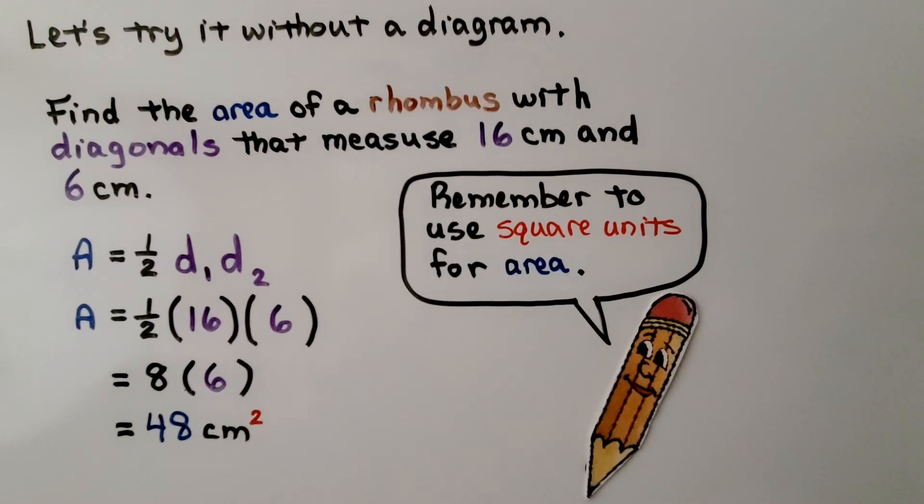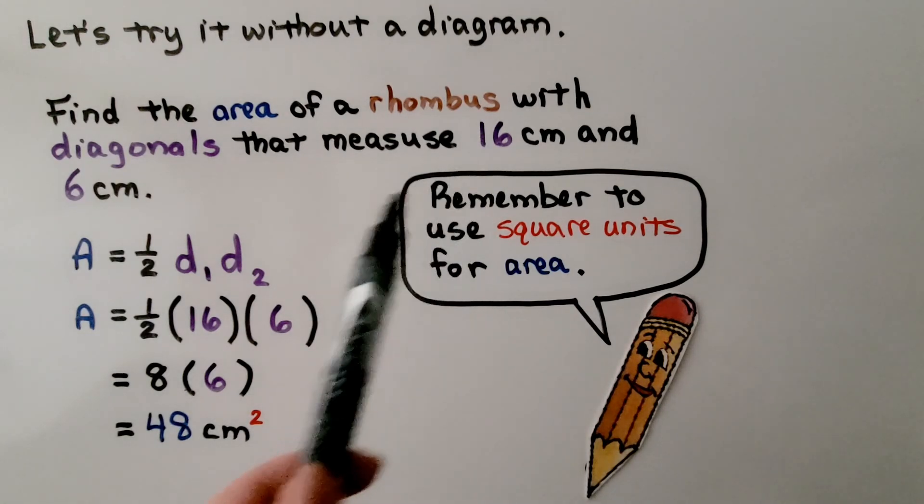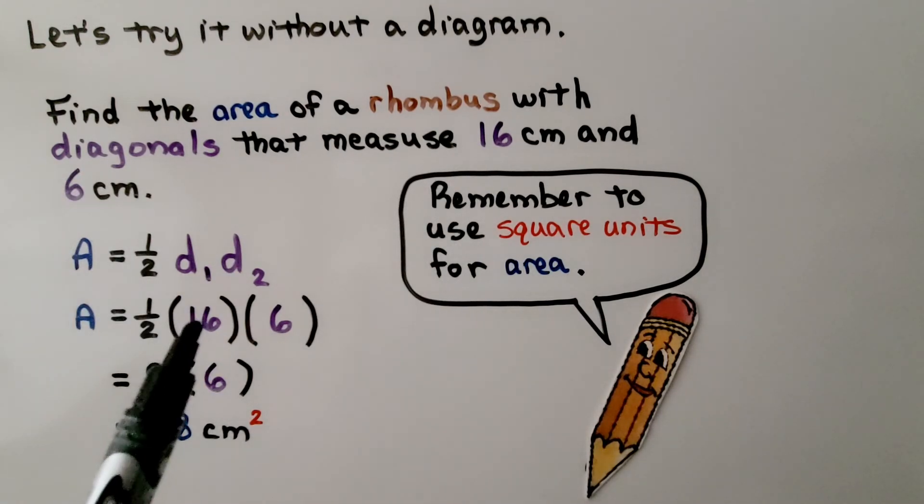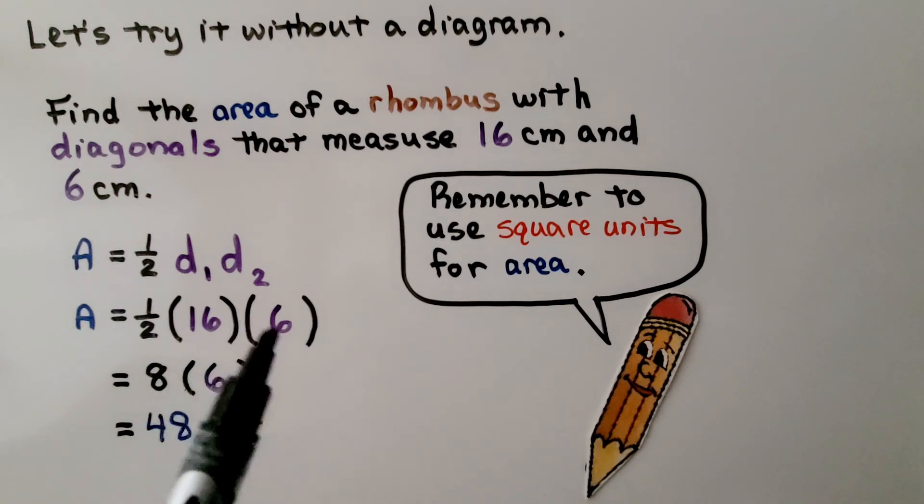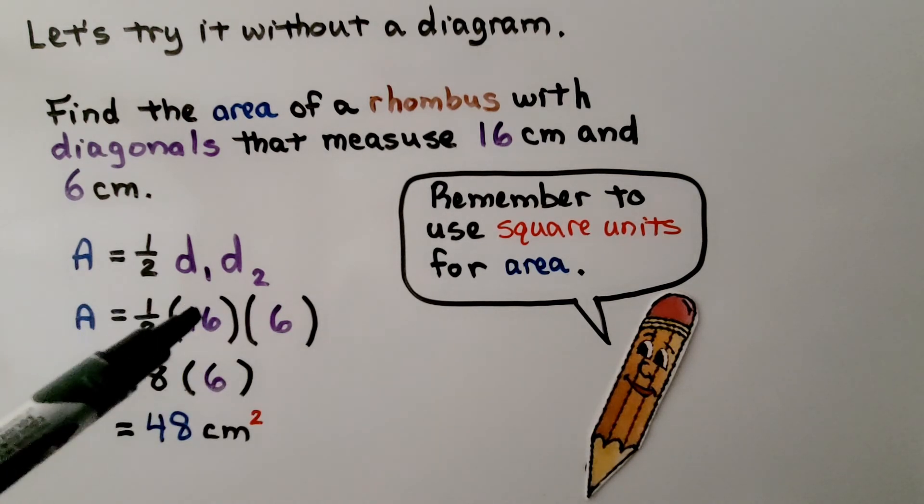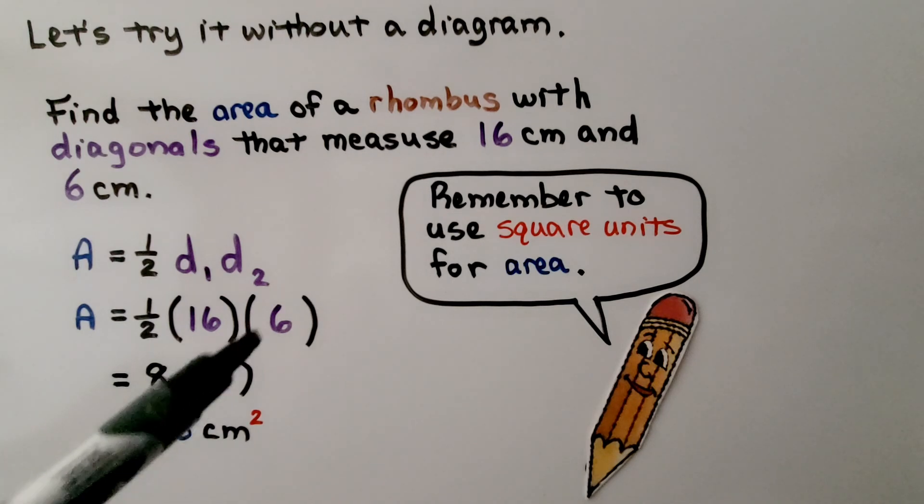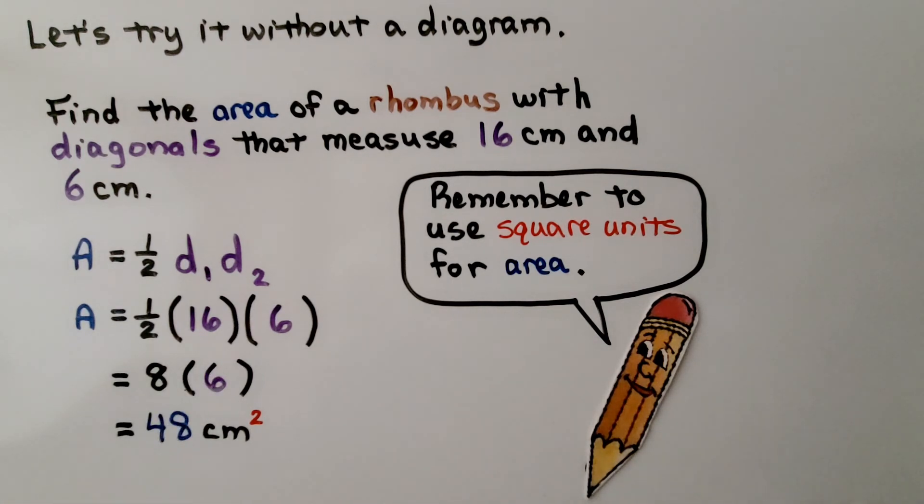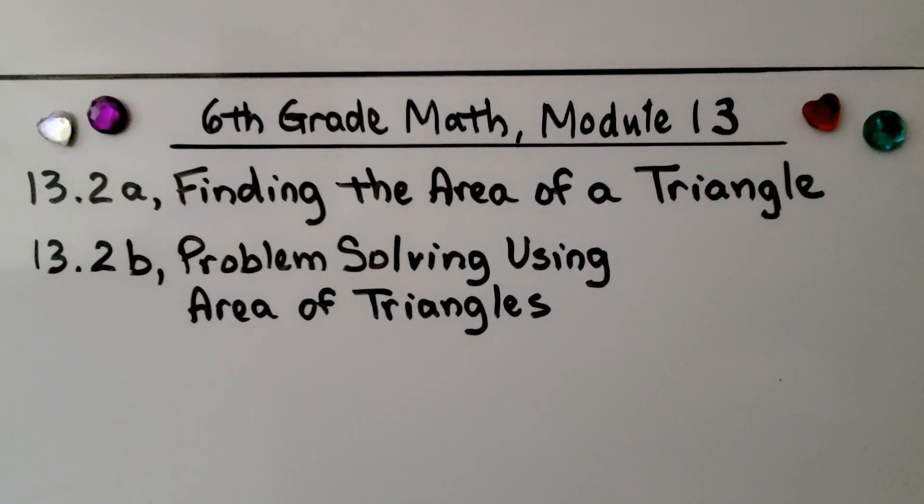Let's try it without a diagram. Find the area of a rhombus with diagonals that measure 16 centimeters and 6 centimeters. So we have our two numbers for our diagonals, 16 and 6. We substitute them into the formula—half of 16 is 8, we multiply that to the 6, we have 48 square centimeters. Just remember to always use square units for area.